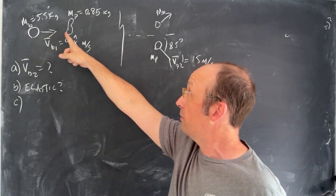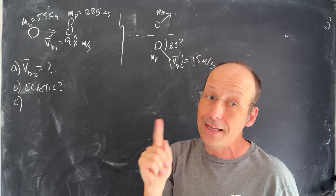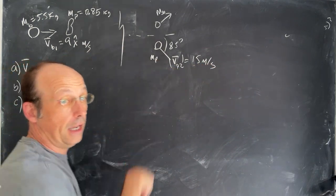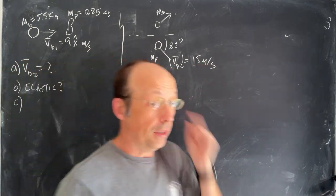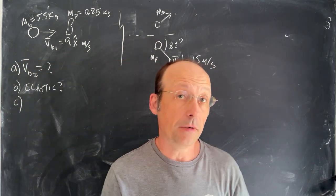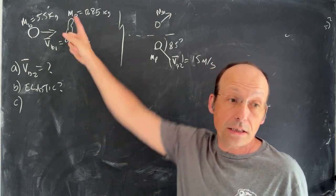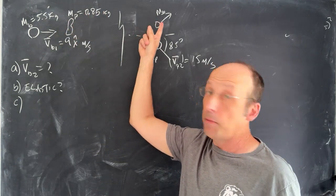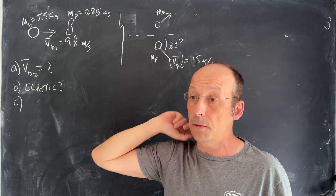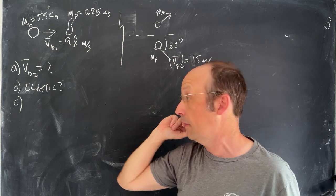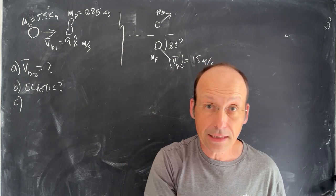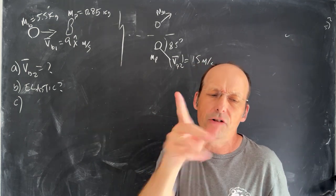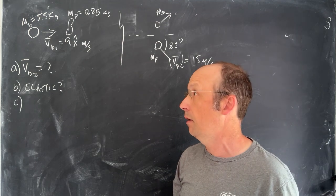So the ball is coming in, it hits the pin, and then the pin deflects at an 85 degree angle with a speed of 15 meters per second. The question asks: what's the velocity of the bowling ball after the collision, was it elastic, and there's a question about kinetic energy, but I'll address that in a second.